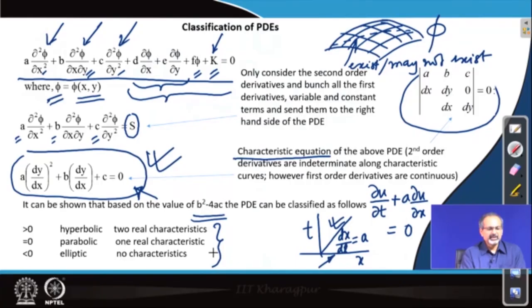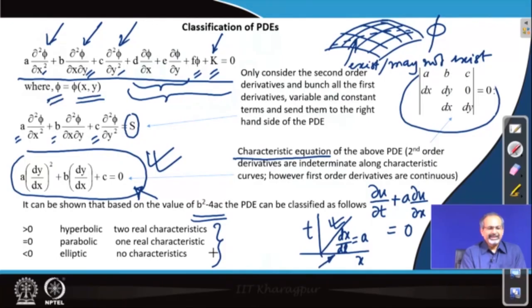When the discriminant B²-4AC is greater than zero, the equation has two real roots — that is the case for hyperbolic partial differential equations, which have two real characteristics. When the discriminant equals zero, there is one real characteristic — that is the parabolic case. When the discriminant is less than zero, the roots are complex conjugates — that is the situation for elliptic partial differential equations. This is the basis for classifying a second-order PDE with two independent variables.